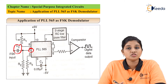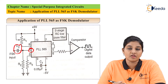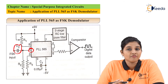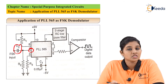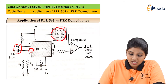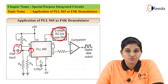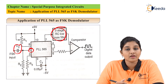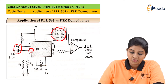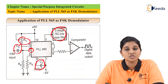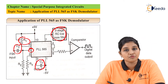As the FSK frequency is applied to pin number 2, the loop locks and the VCO starts tracking the input frequency between FH and FL. The corresponding DC shift will be provided at the output. The three-stage RC low pass filter is used to remove the DC component present in the carrier frequency of the input signal. The resistor R1 and capacitor C1 are used to determine the free running frequency of the VCO.